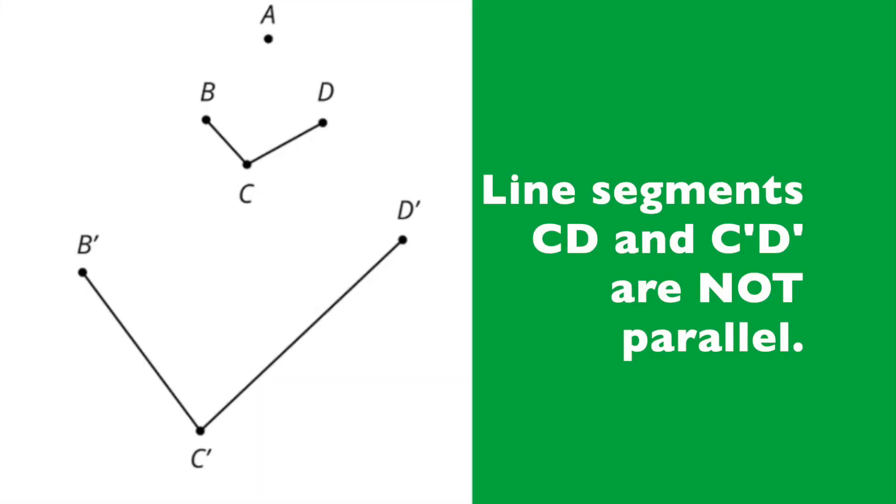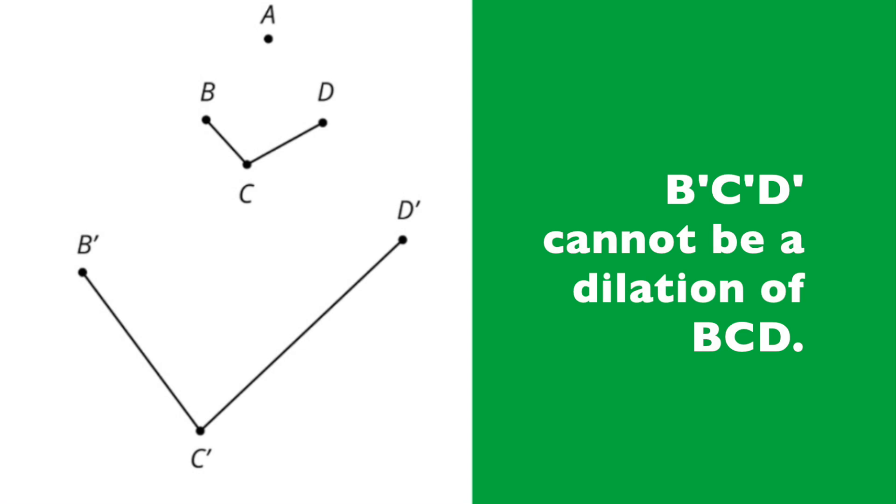Also, if you look close enough, you can see that line segment CD and line segment C prime, D prime are not parallel. And it's because of these reasons that B prime, C prime, D prime cannot be a dilation of BCD.